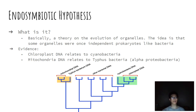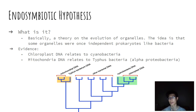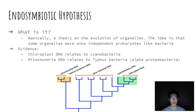Basically, the endosymbiotic hypothesis, or the endosymbiotic theory, is just a theory of the evolution of some of the organelles found within the cells. The idea is that some organelles were once independent prokaryotes, like bacteria.